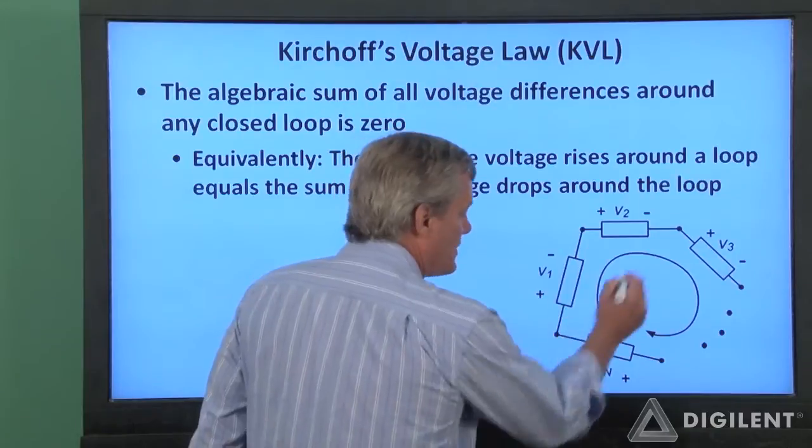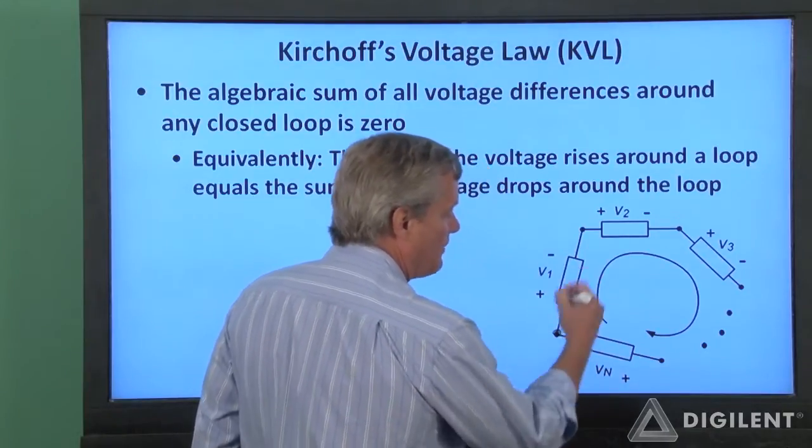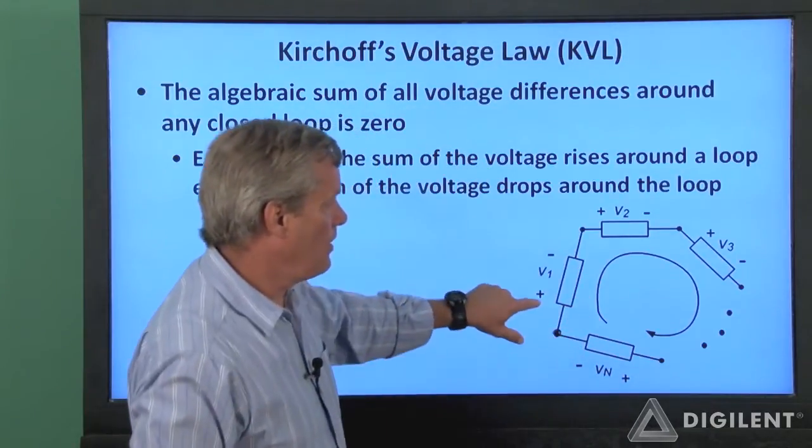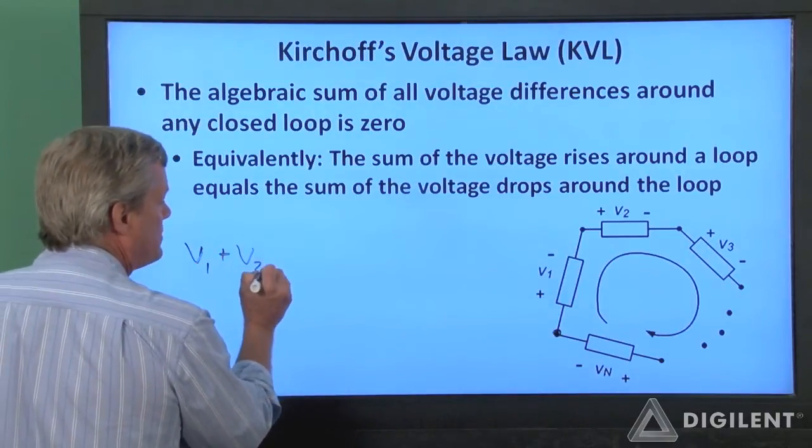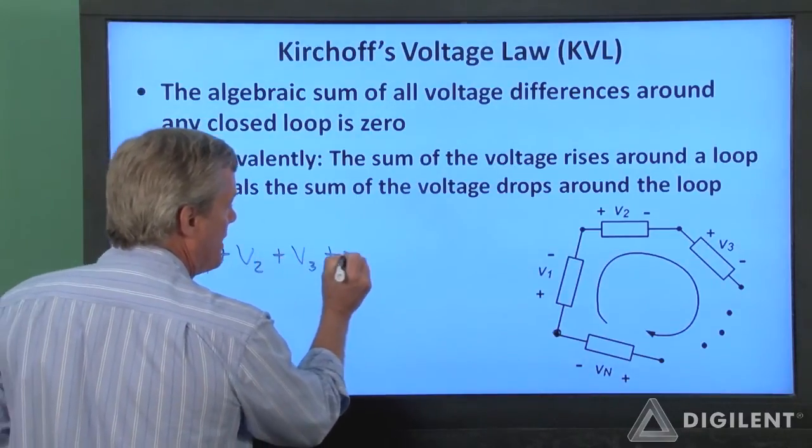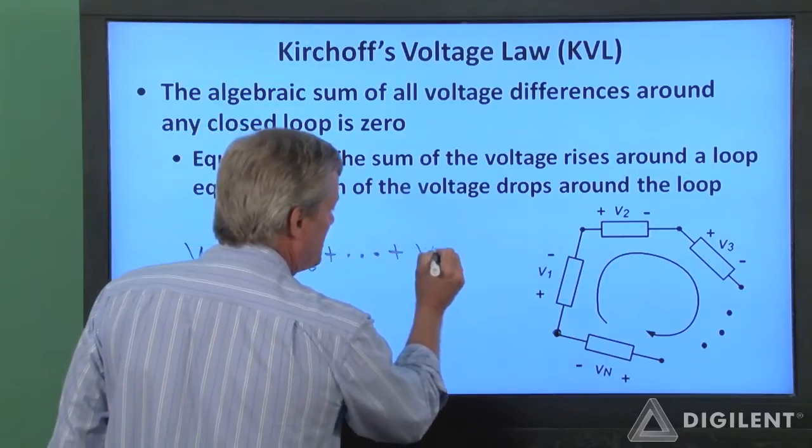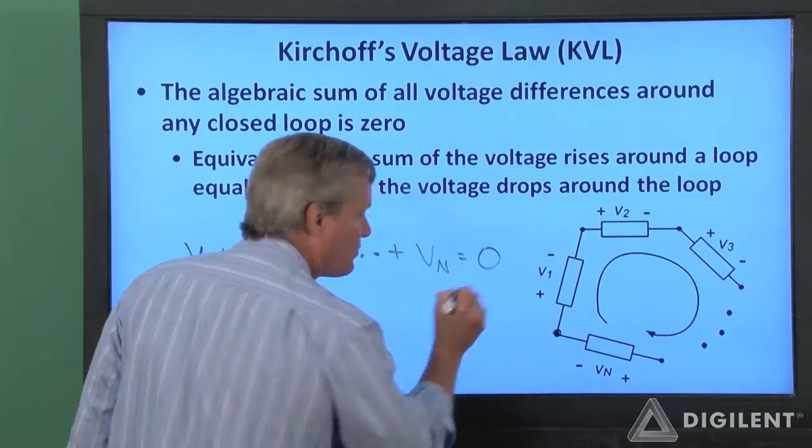So if we sum the voltage drops around this loop, starting here, V1 is a voltage drop, so V1 plus V2 plus V3, add up all the other voltages up to V sub N, that totals to zero.